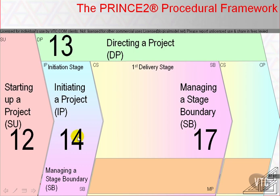The initiation stage is the first of a minimum of two stages. Since it is a stage, it will be brought to an end by four of the five activities of the managing stage boundaries process. Stage boundaries has an activity for normal or abnormal stage end, only one of which will be used in any transition from current to next stage.